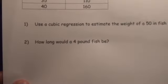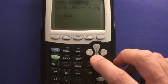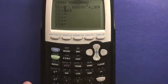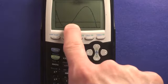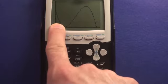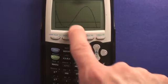Then for the second part, how long would a 4-pound fish be? Well, 4 pounds is about 64 ounces. So we're going to go to Y2 and put a 64 in there. And when we graph, we're going to get an intersection point. It will be the first intersection point because this would be before our data starts, and this would be well after the weight of the fish has gone down.